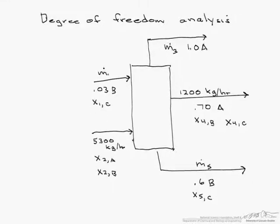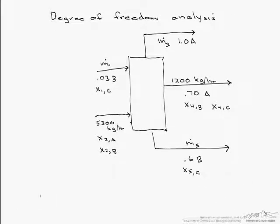So take a look and if we look at the flow rates we have m1, m3, and m5 that we do not know.